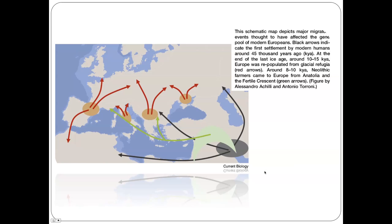A more modern view shows black arrows indicating the initial colonisation around 45,000 years ago, then movement out of refugia at the end of the Ice Age around 10,000 to 15,000 years ago, and then Neolithic farmers coming in from the Fertile Crescent — three major waves or processes populating Europe.